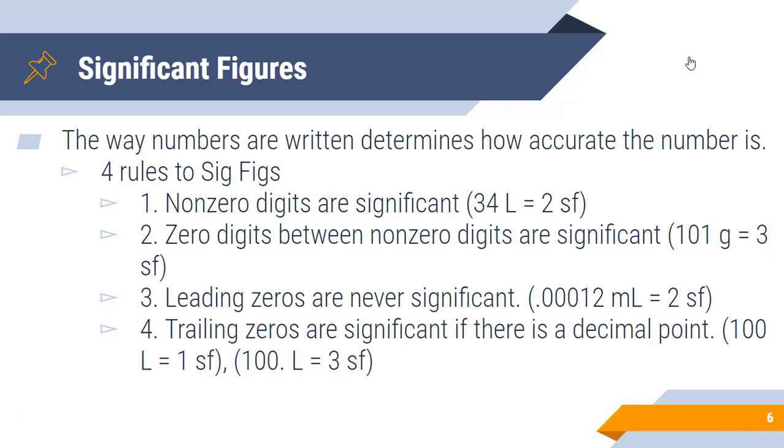When we talk about using significant figures in science class, the way that the numbers are written actually determines how accurate the number is. There are four key rules. First, all non-zero digits are significant - 34 liters would have two significant figures, the three and the four. Second, zero digits between non-zero digits are significant. So 101 would have three significant figures, the one, the zero, and the one. Third, leading zeros are never significant. Now these leading zeros always occur before the number, not necessarily the decimal point. So 0.00012 milliliters only has two significant figures. The zeros in front are not significant because you can write that as 1.2 times 10 to the negative fourth in scientific notation.